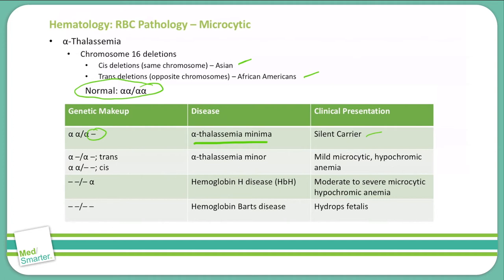When two alpha chains are deleted, you can have a trans deletion — on two different chromosomes — or a cis deletion on the same chromosome. Both translate into alpha thalassemia minor, and symptoms are usually mild, giving you a mild microcytic hypochromic anemia.